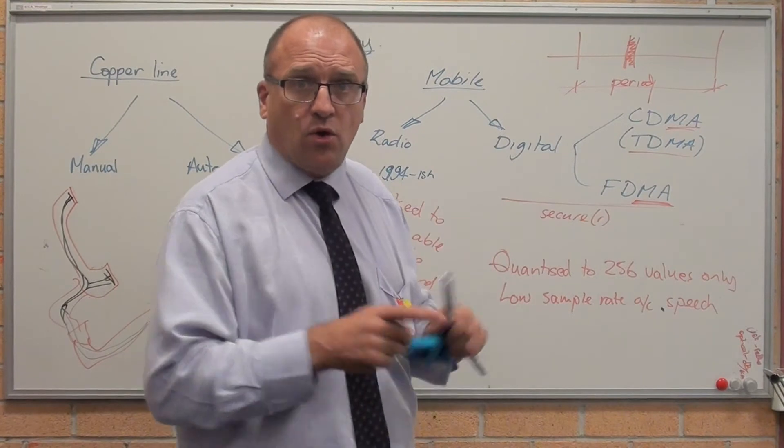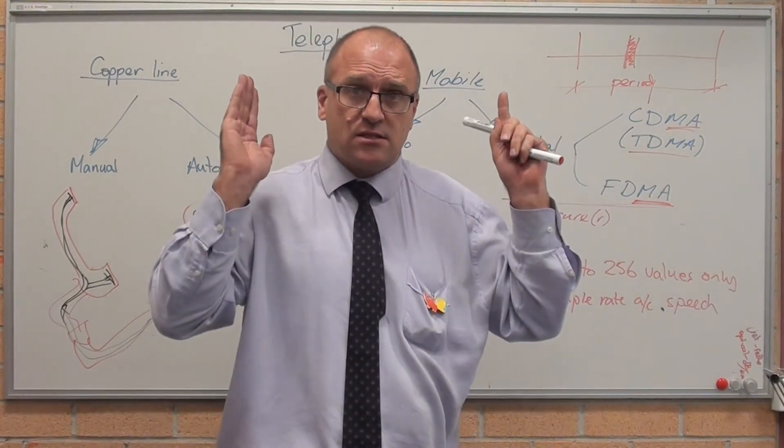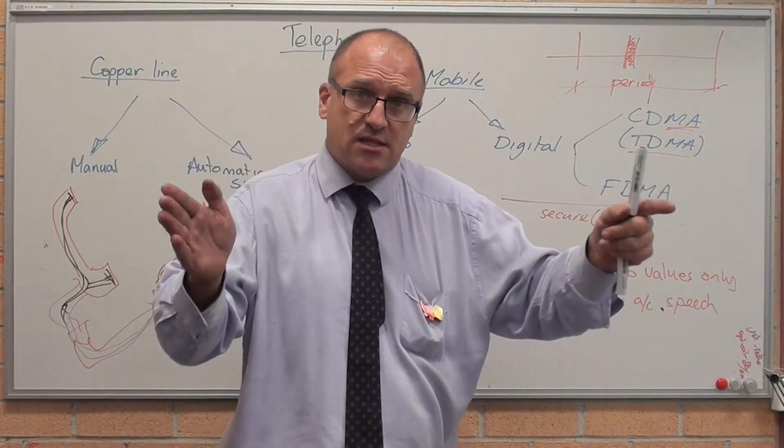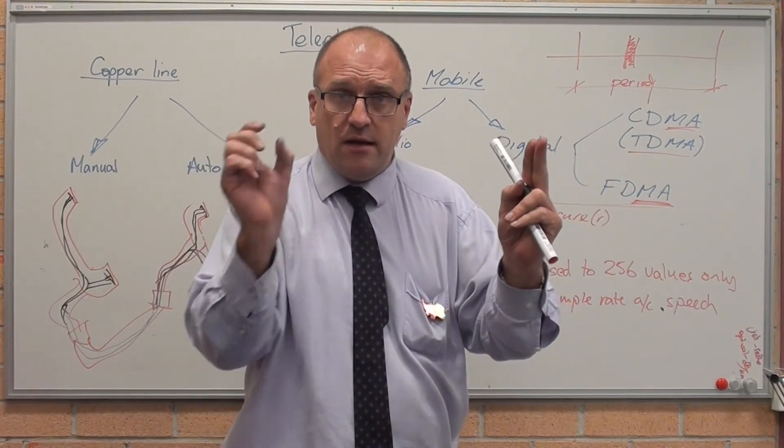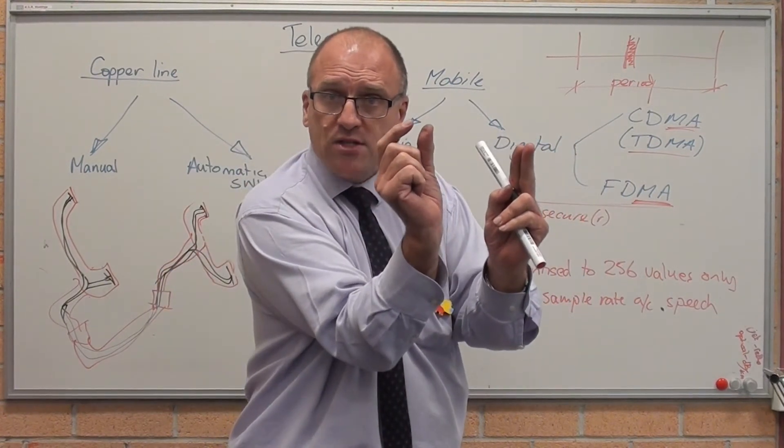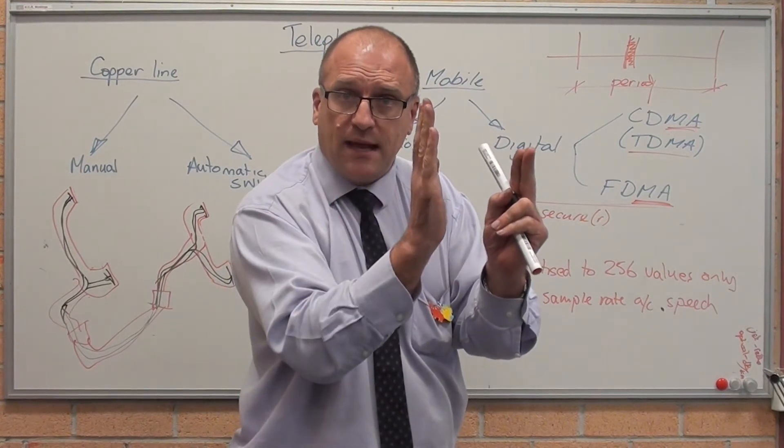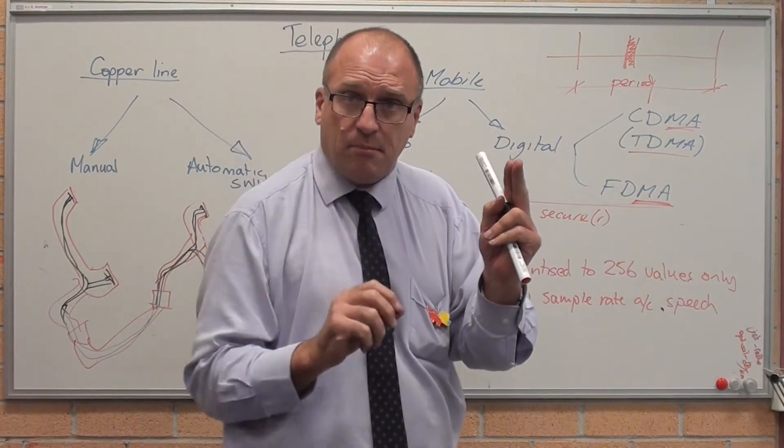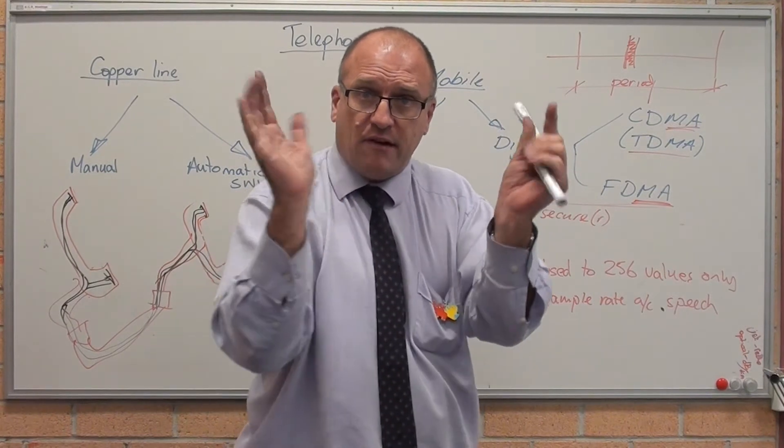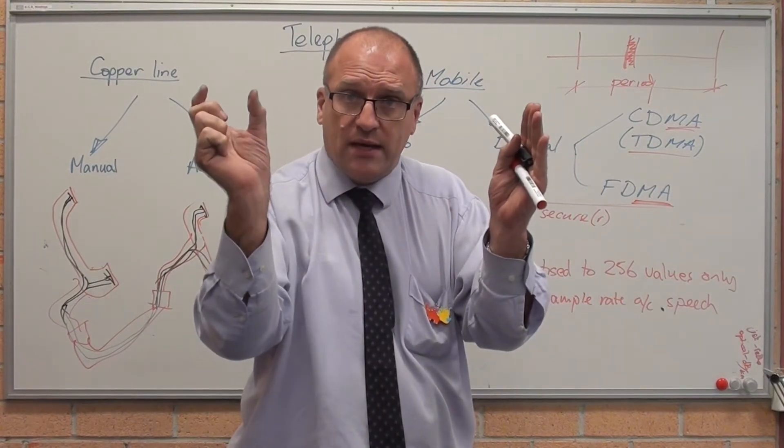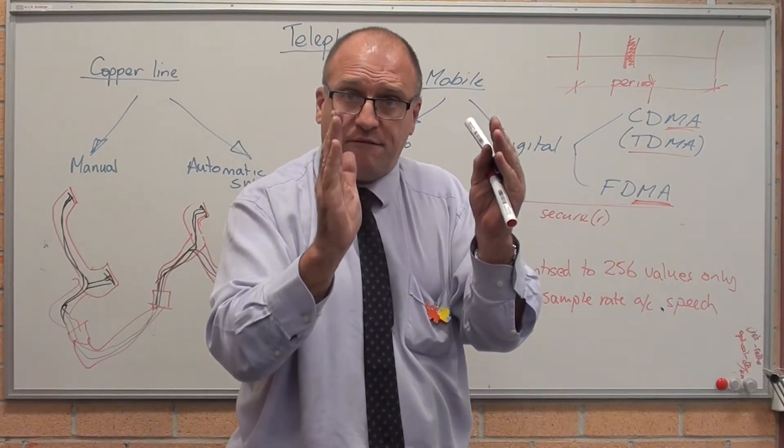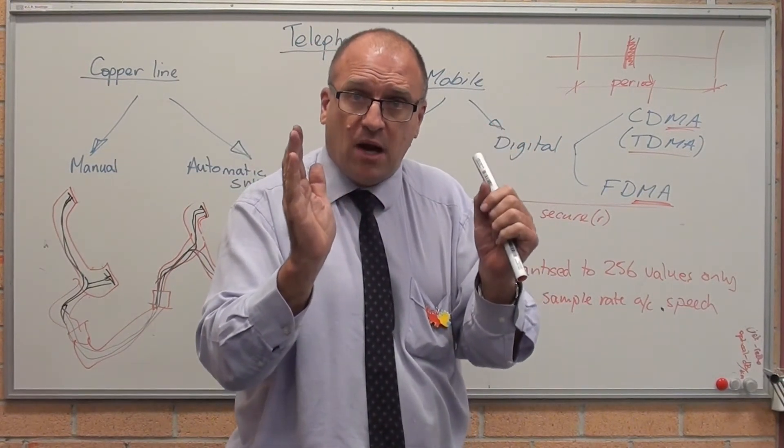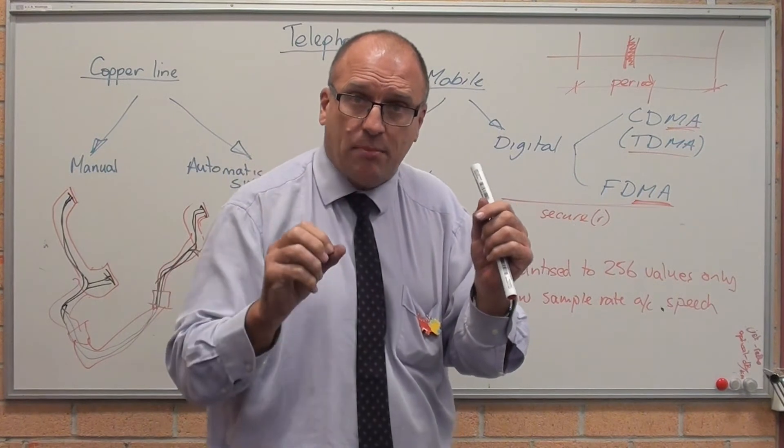Code division or time division means the mobile phone tower sends out a signal every so often, and of that time period, your mobile phone has only allocated a tiny bit. Tiny bit for download to your phone, tiny bit for upload back. At the very start of that packet, there's a window saying this is your time. It sends it out to your phone, your phone waits the appropriate number of microseconds, it sends its signal back out.